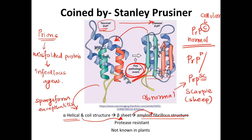So if a normal protein comes in contact with the infectious diseased one, this will lead to misfolding. The misfolding not only changes the entire structure of the protein, but it also makes it protease resistant. So even if the protein is misfolded, it is not targeted for degradation as it is resistant to the protease. Prion diseases are only found in animals and human beings — there is no known prion disease in plants.